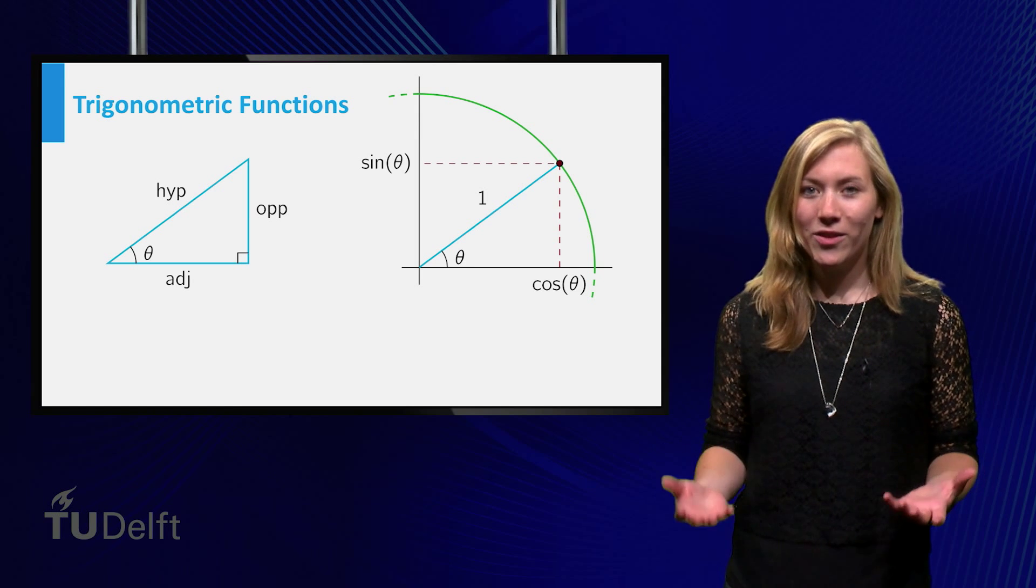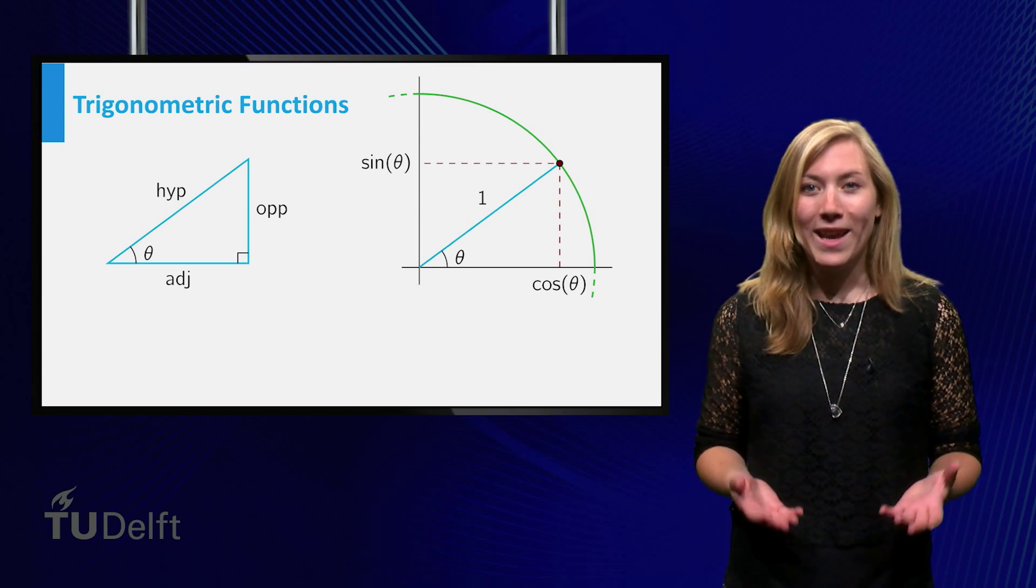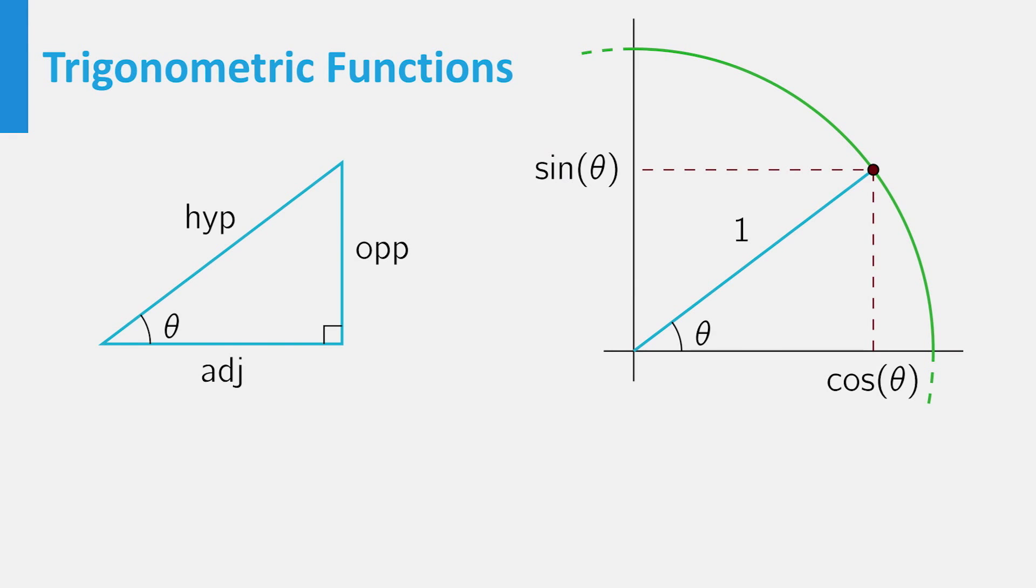There are two basic ways to define the trigonometric functions, by looking at a right-angled triangle and by looking at the unit circle. In a right-angled triangle with angle theta, the sine of theta is equal to the quotient of the opposite side and the hypotenuse.